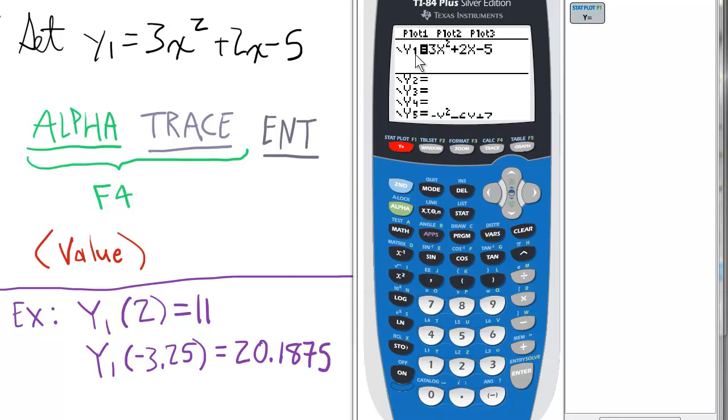First, we set Y1 equal to the function we wish to evaluate. In this case, it's 3x² + 2x - 5.